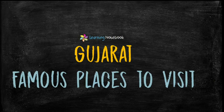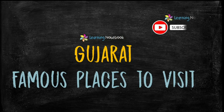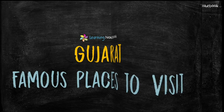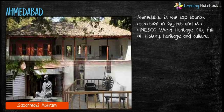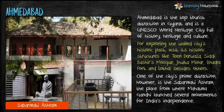Now let's learn about famous places to visit in Gujarat. The first famous place is Ahmedabad. Ahmedabad is the top tourist attraction in Gujarat and is a UNESCO World Heritage City full of history, heritage and culture. One of the city's prime attractions is Sabarmati Ashram — the place where Mahatma Gandhi launched several movements for India's independence.